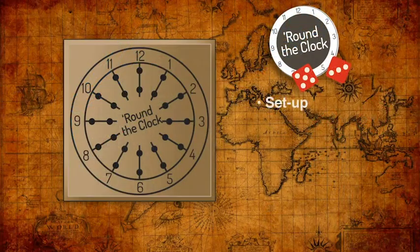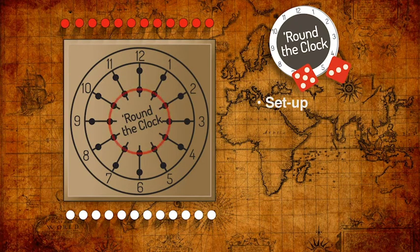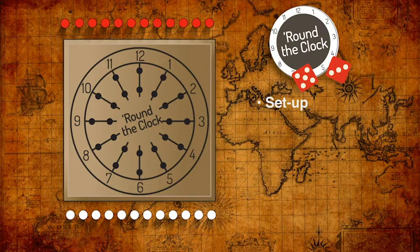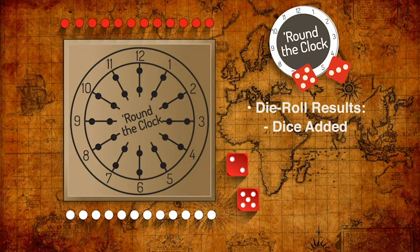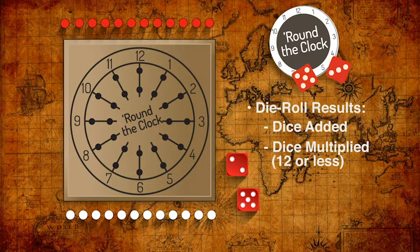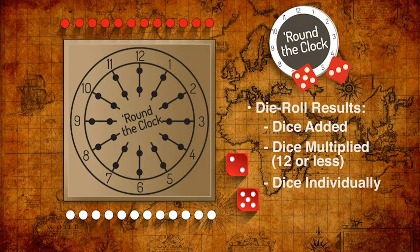Let's take a look at the detailed rules. Each player takes 12 pegs of the same color and chooses either the inside ring or the outside ring of holes on the board to record their play. The starting player then takes up the two standard six-sided dice. During their turn, each player will roll both dice and consider the following results: the total of the dice added together, the total of the two dice multiplied if that result is 12 or less, or the dice as two separate numbers. The player then places pegs in empty holes which will represent that result.